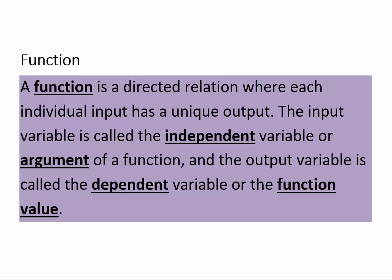A function is a relation in which every individual input has a unique output. That means you can have several inputs corresponding to a single output, but you cannot have a single input corresponding to multiple outputs. The input is called the independent variable or the argument of a function, and the output variable is called the dependent variable or the function value.